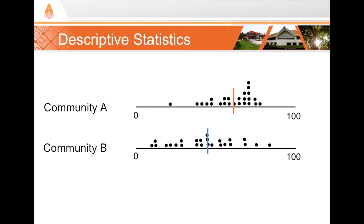For Community A, the median age of participants is 55 years, and for Community B, the median age of participants is 44 years. Again, our measure of central tendency, this time using median, tells us that Community A is older than Community B.